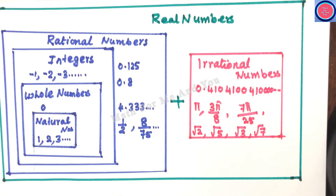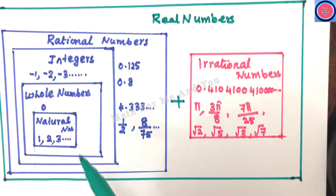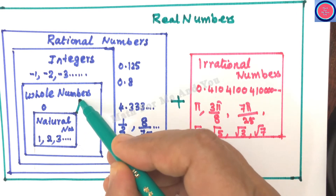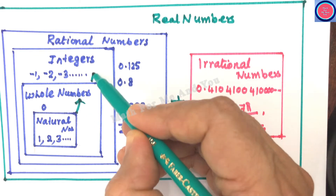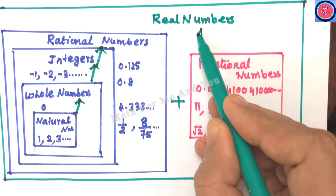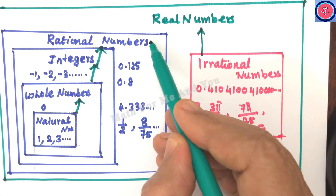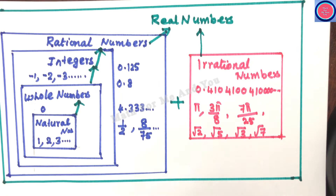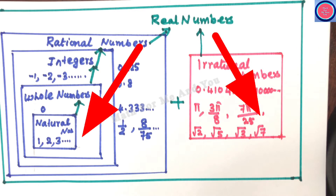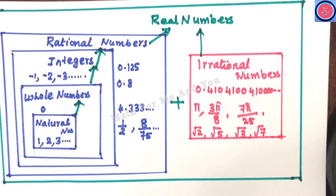How do we answer true or false questions from this chapter correctly? If a statement goes from a smaller set to a larger set, the statement will be true. For example: every natural number is a whole number; every whole number is an integer; every integer is rational; irrationals are real numbers; rationals are real numbers — these are all true. But the opposite direction, from a larger set to a smaller set, will be a false statement.